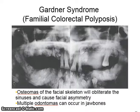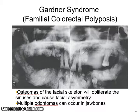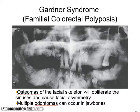Gardner syndrome, also known as familial colorectal polyposis, consists of osteomas of the facial skeleton which obliterate the sinuses and cause facial asymmetry. Multiple odontomas can occur in the jaw bones.